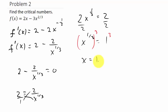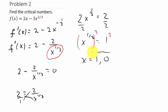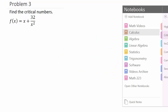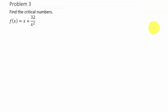So x equals 1 is a critical number. Also, when x is 0 the derivative is undefined, and 0 is in the domain of the function, so x equals 0 is also a critical number. Your critical numbers are x equals 1 and x equals 0.